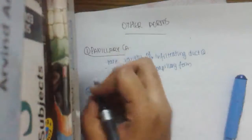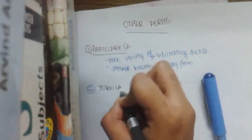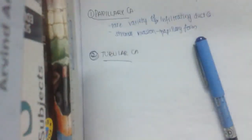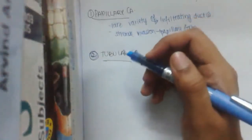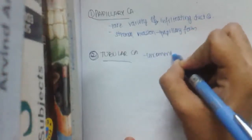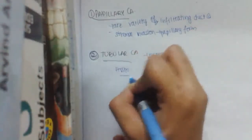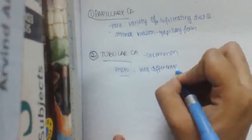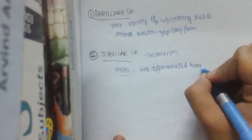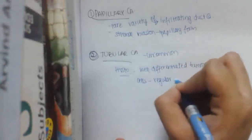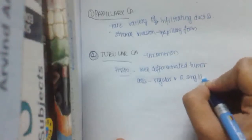The second one is tubular carcinoma. Here, tubular carcinoma is an uncommon variant. Histologically, the tumor is well differentiated, tumor cells are regular in a single layer, and stroma is fibrous stroma.